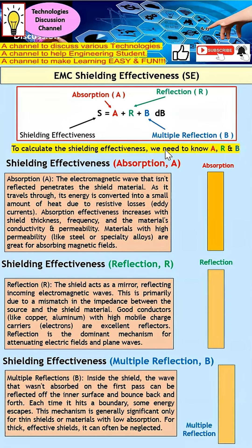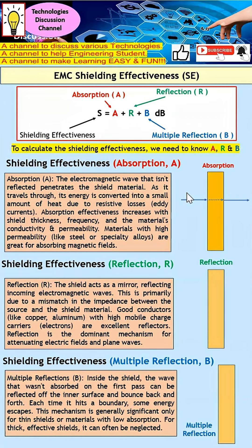Let's start off with absorption. What is actually absorption? You can imagine that the incident waves hit the shield. The EM waves that hit the shield — those that are not reflected — will try to penetrate the shield material. Absorption effectiveness increases with shield thickness, basically measuring how much EM energy actually lands into this part of the world.